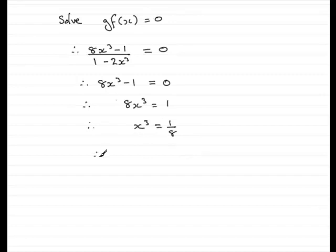And then just need to take the cube root of both sides, so we end up with x equals the cube root of 1 eighth. And this is going to be the cube root of 1 divided by the cube root of 8.